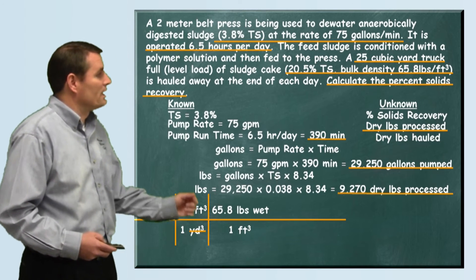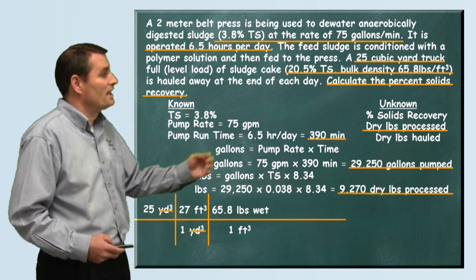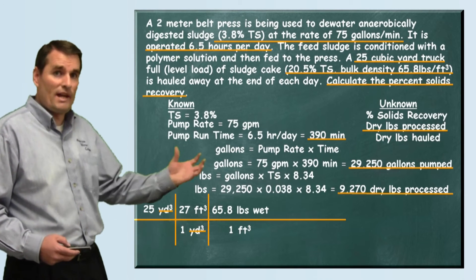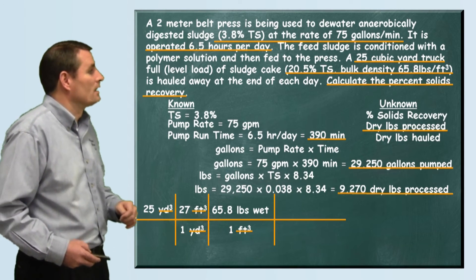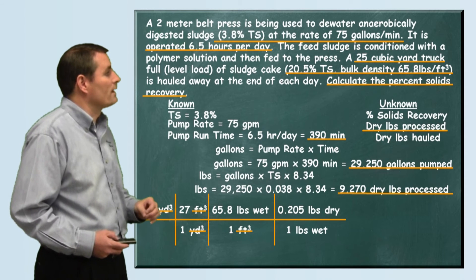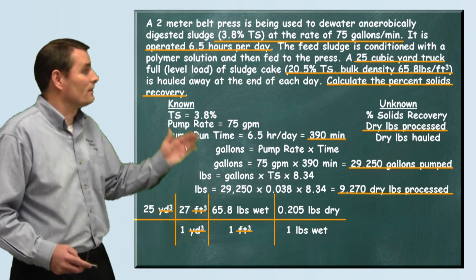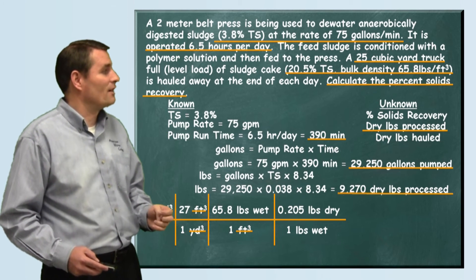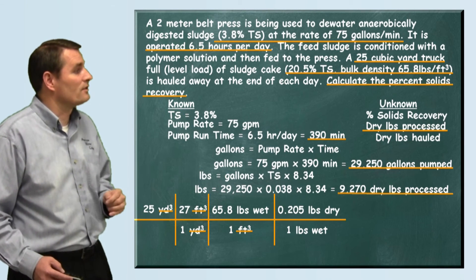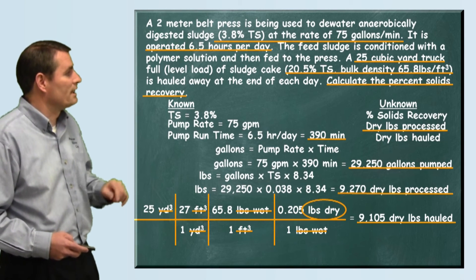Now we can use our unit conversion that they gave us. For every cubic foot of sludge it's 65.8 pounds wet. That's the weight of the wet sludge in the truck. They also told us that our sludge was 20.5 percent total solids, so we enter that in decimal form as 0.205 pounds dry. For every wet pound, since it's 20.5 percent total solids, there's 0.205 pounds dry.